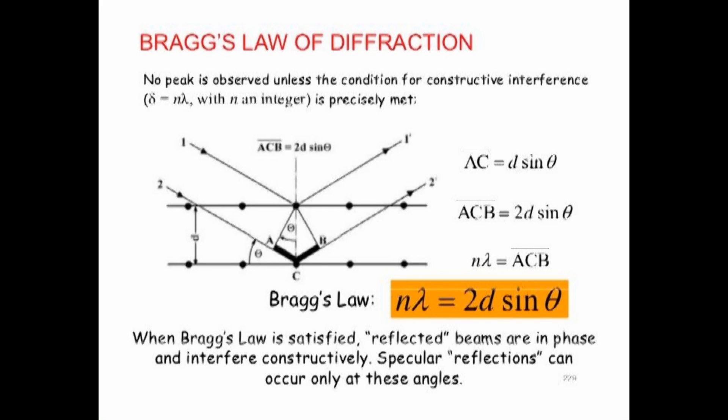Constructive interference is obtained when Bragg's law is satisfied: n times lambda equals 2d times sine theta, where lambda is the X-ray wavelength.